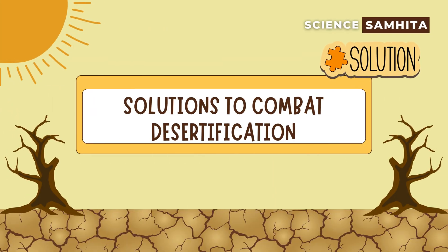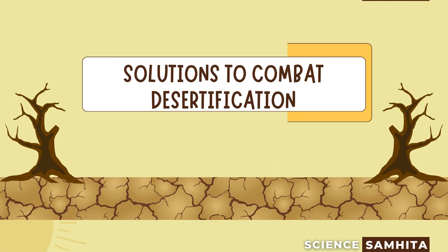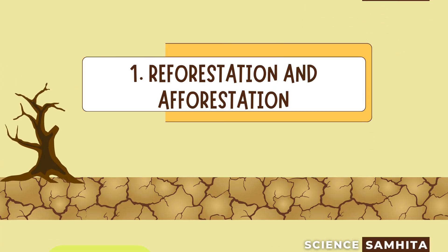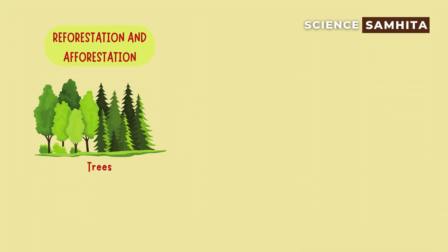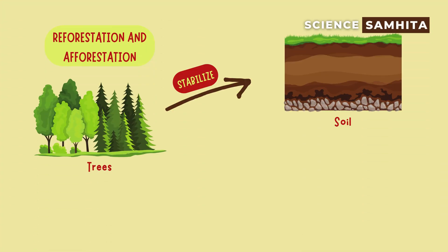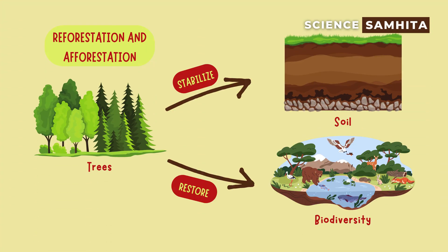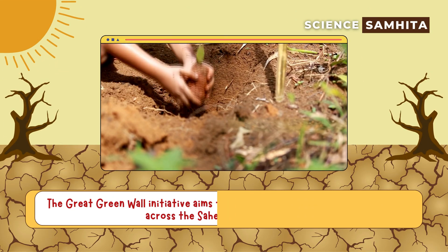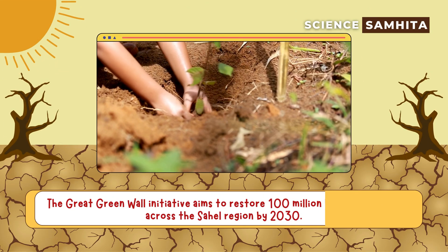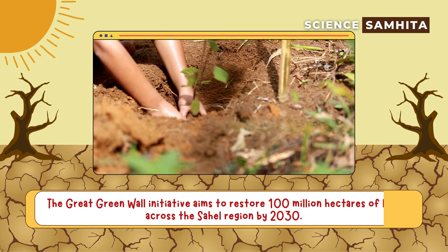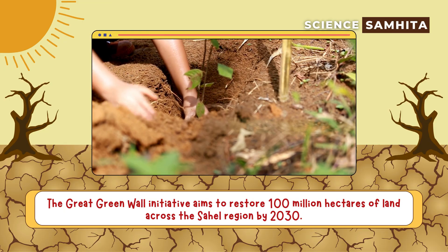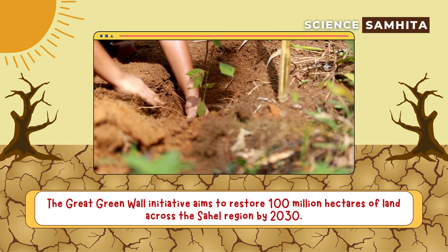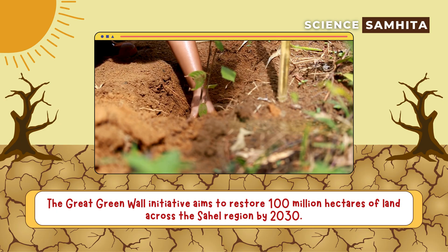How can we combat desertification? First, reforestation and afforestation. Trees stabilize the soil and restore biodiversity. For example, the Great Green Wall Initiative aims to restore 100 million hectares of land across the Sahel region by 2030.